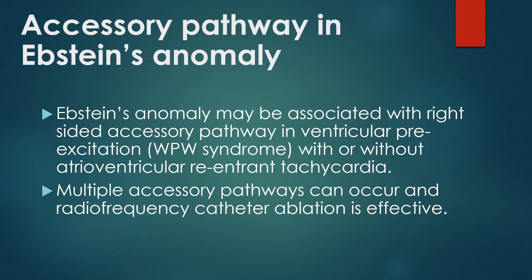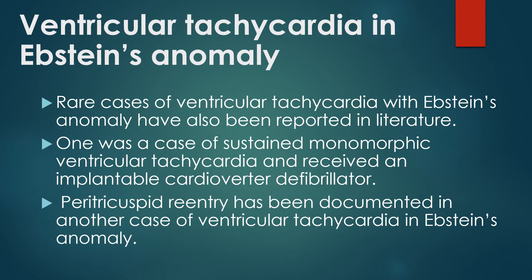Ebstein's anomaly may be associated with right-sided accessory pathways causing ventricular preexcitation, with or without atrioventricular reentrant tachycardia. Multiple accessory pathways can occur, and radiofrequency catheter ablation is effective. Rare cases of ventricular tachycardia with Ebstein's anomaly have also been reported in the literature.